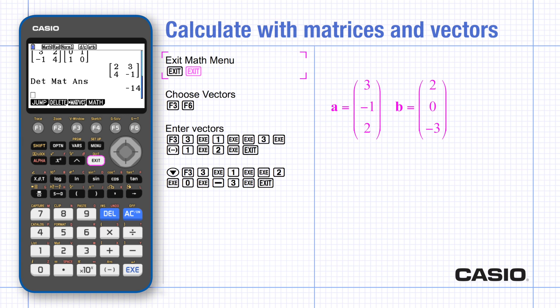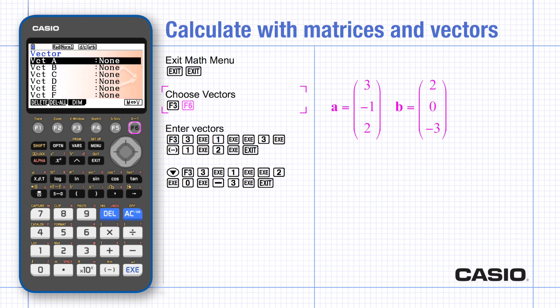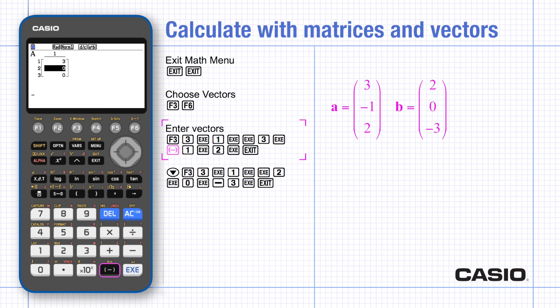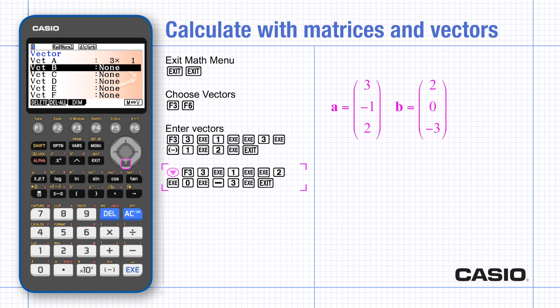Go back through the menus, settings, and icons. Choose Matrix Vector and then Vector page. Choose the dimension for the vector and type in the coefficients. Then exit and scroll down to enter vector B.